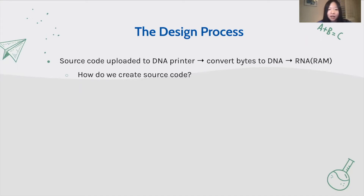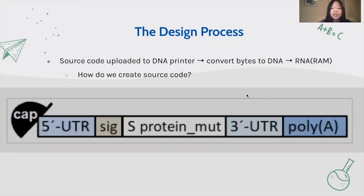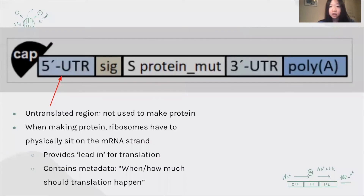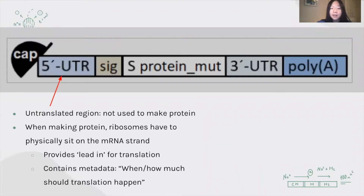What's the source code made up of? This is a diagram that categorizes the source code into a few important categories. Every sequence starts with a cap — just bases G and A, which are also called the headers of the vaccine. After the headers, there's a sequence called the 5' untranslated region. This region will not be used to make the protein. Ribosomes have to physically sit on the mRNA strand to start the translation process, and this region provides the lead-in signal for translation, and also contains metadata, such as when and how much translation should happen.